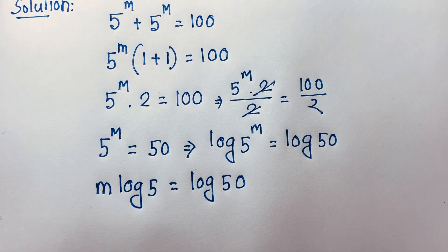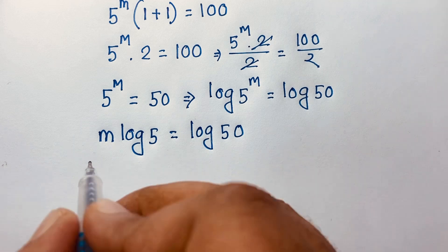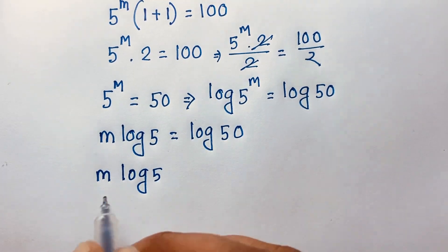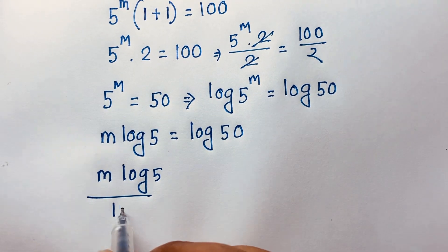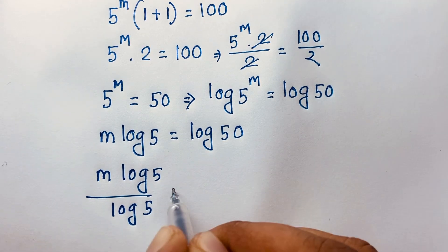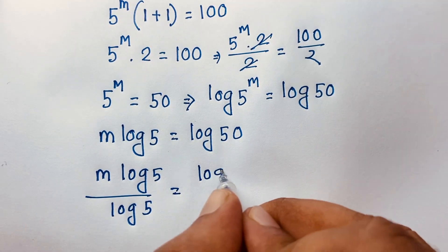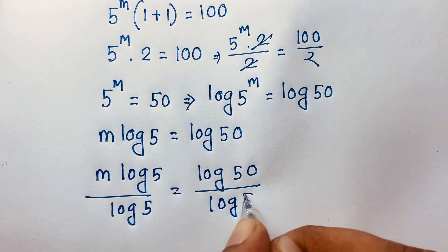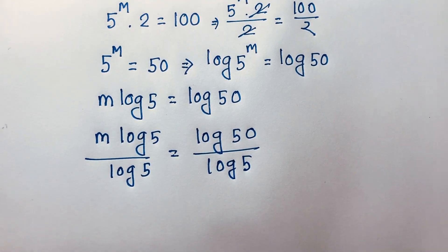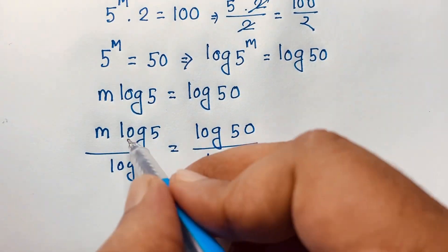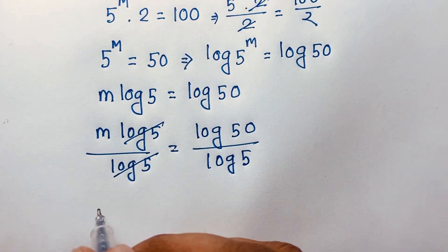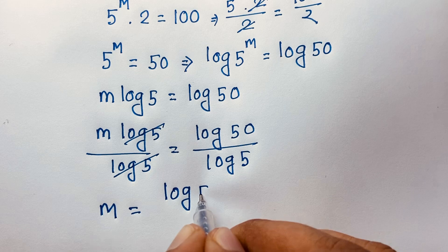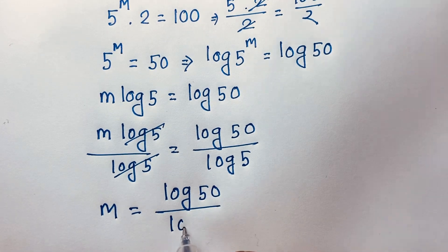Then I divide both sides by log 5. So m log 5 over log 5 equals log 50 over log 5. The log 5's cancel out, and we find m is equal to log 50 over log 5.